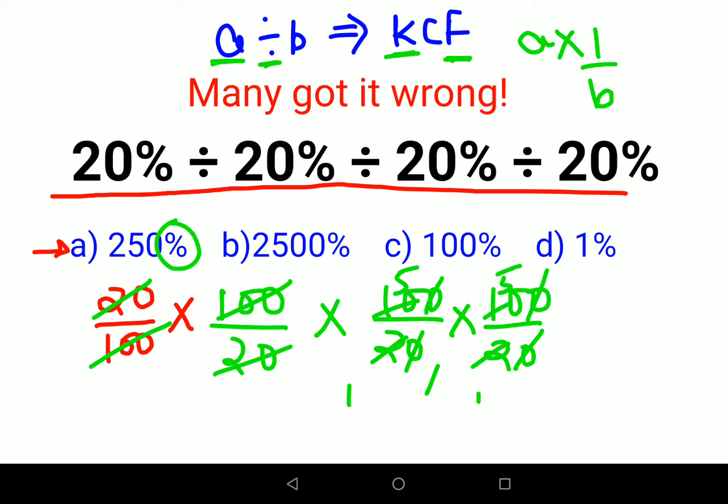Now please understand, the options are given in percentage. So in order to find the percentage value, you just have to multiply the entire thing by 100. So the answer comes out to be 5 into 5 is 25, into 100, that gets you 2500. That means option B is my answer. I hope this is very clear.